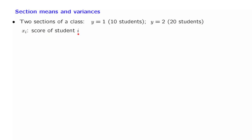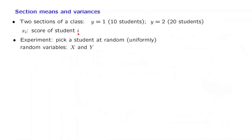Let x_i be the score of student i — say the final grade in the class. We consider the following probabilistic experiment: we pick a student at random, uniformly, so that each student is equally likely to be picked. We define two random variables: X is a numerical random variable that gives us the score of the selected student, so if student i is selected, the value of X is x_i. And Y is defined as the section of the selected student, so that Y takes values 1 or 2.